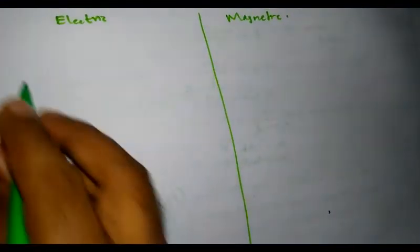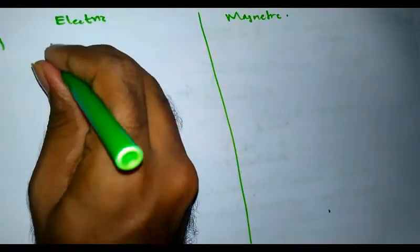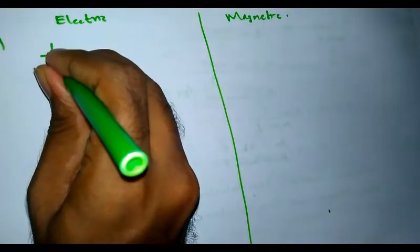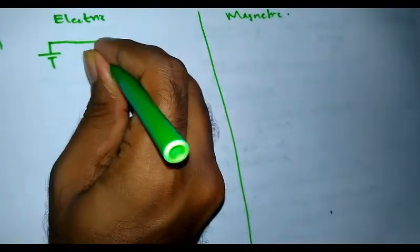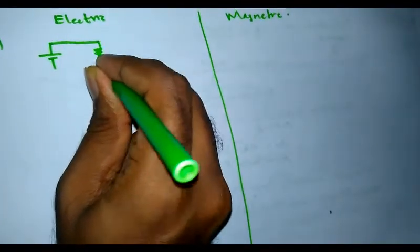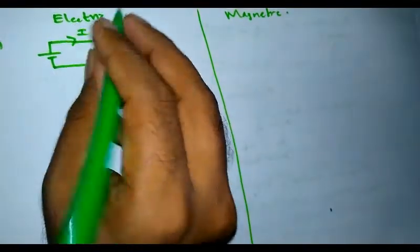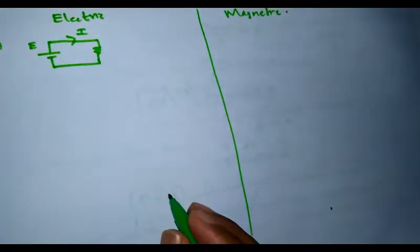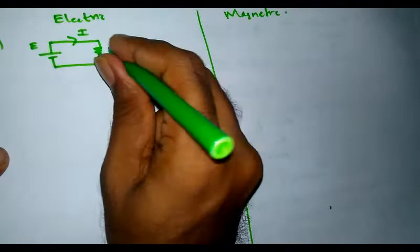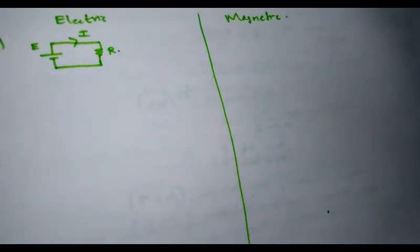First, I can represent an electric circuit as a battery and a resistor R. This is an example of an electric circuit where I is the current flow, E is the EMF source, and R is the resistance load.